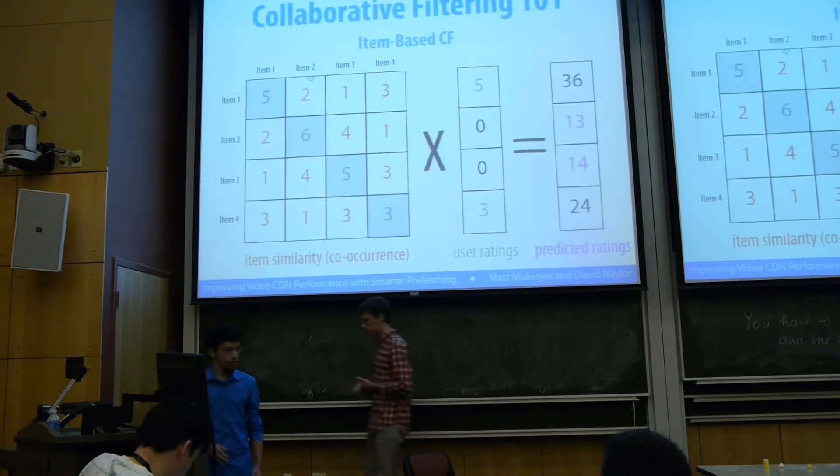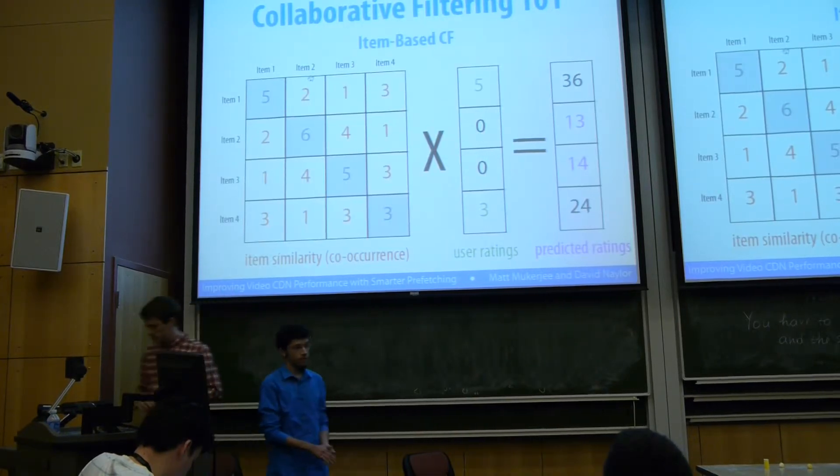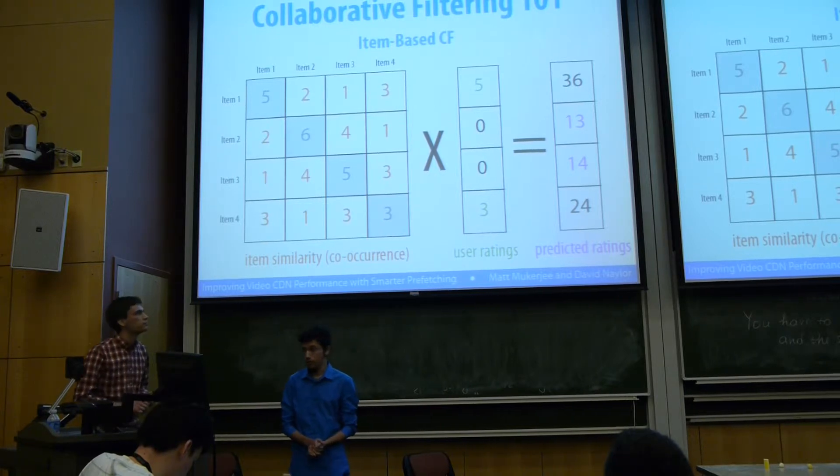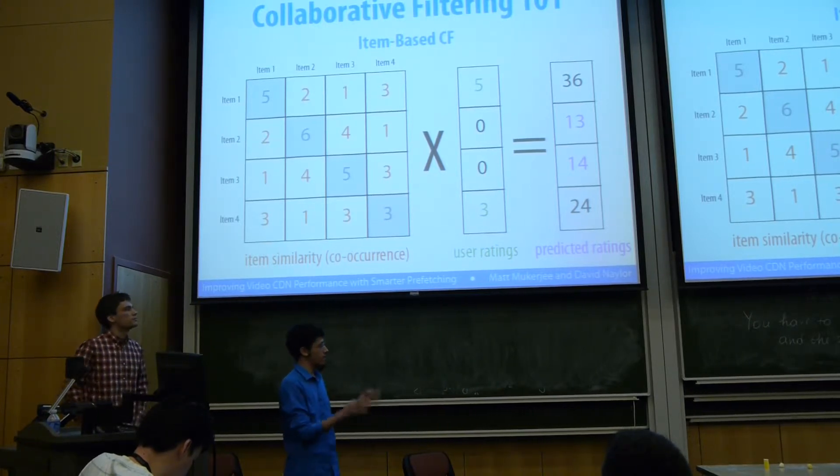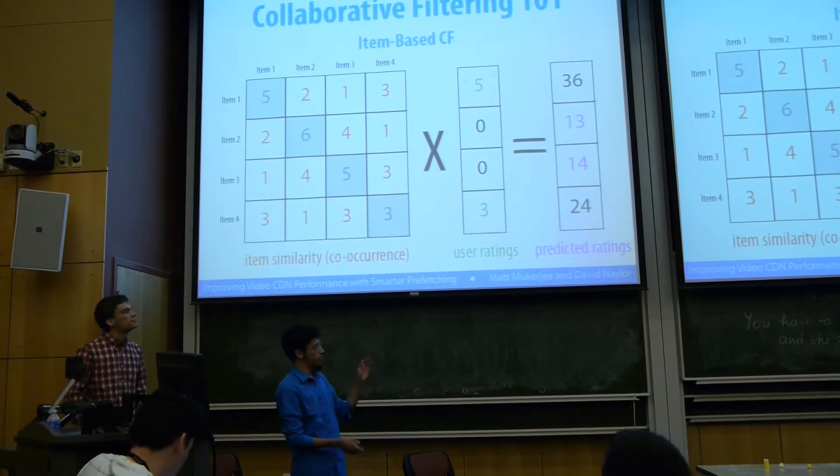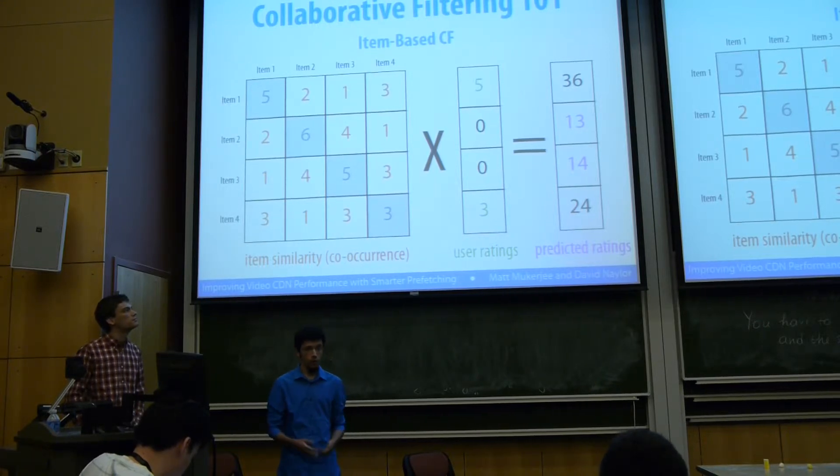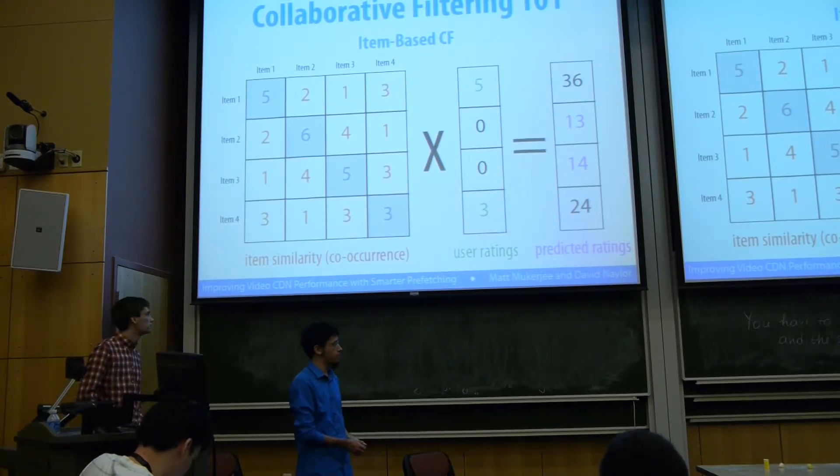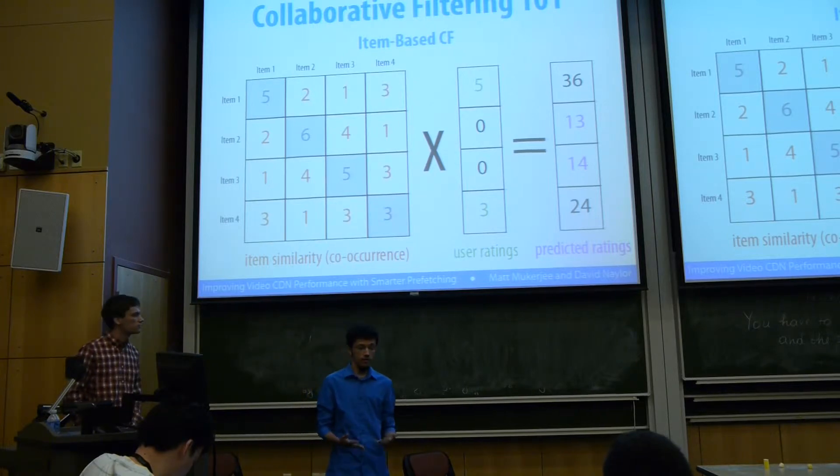I'm going to walk you through a simple example of item-based collaborative filtering. What that means is we need to construct an item-to-item similarity matrix, as you can see on the left here. In our case, that will be videos comparing the similarity between two videos.